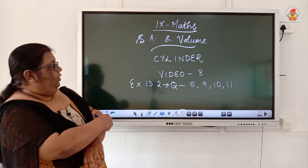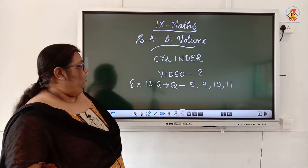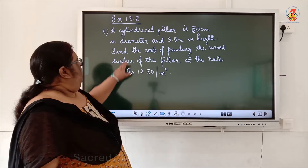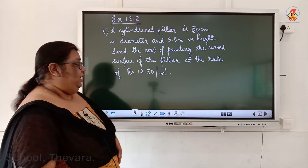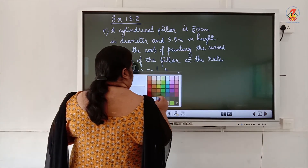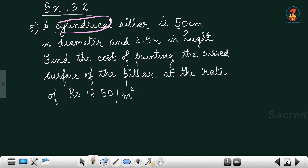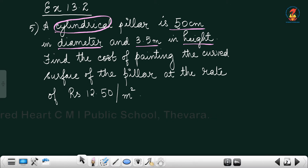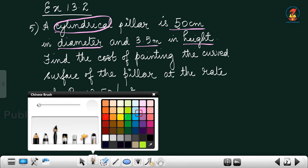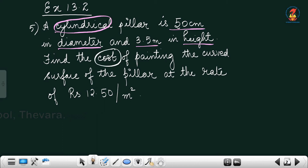We continue with Exercise 13.2, questions 5, 9, 10, and 11. Question 5: A cylindrical pillar is 50 centimeter in diameter and 3.5 meter in height. We need to find the cost of painting the curved surface of the pillar at the rate of rupees 12.50 per meter square.